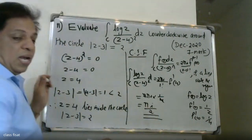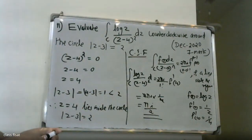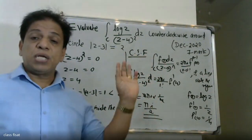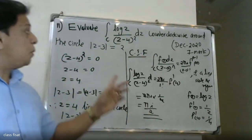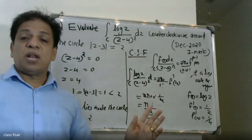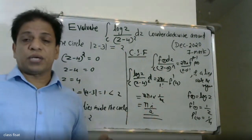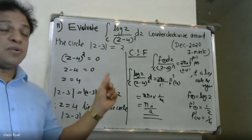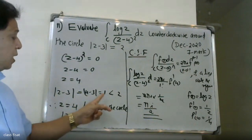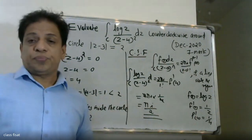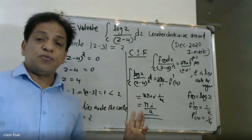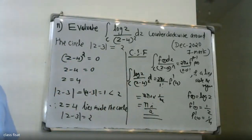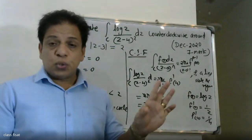To verify the singularity contribution: set the denominator equal to zero. (z minus 4) squared equals zero gives z equals 4. Checking: modulus of 4 minus 3 equals 1, which is less than 2. So z equals 4 lies inside the region, and we can apply Cauchy's Integral Formula.